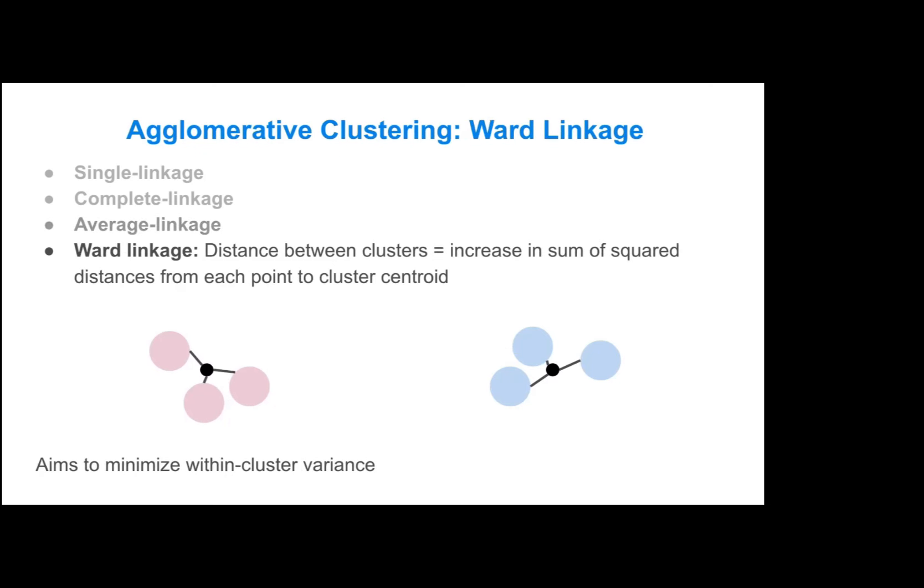And then the fourth method is ward linkage, and this is basically where the distance between clusters is equivalent to an increase in the sum of the squared distances from each point to the cluster centroid. You can think of if you were to combine these two clusters, what would be the increase in the sum of the squared distances from all those points to the new cluster center? If two clusters are very far apart, you're going to get a much larger increase in that sum of square distances versus if those clusters are smaller. This is a method that you would use if you're really willing to minimize within cluster variance, so you really want to emphasize the separation of clusters.